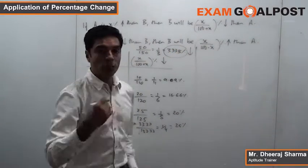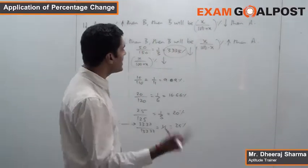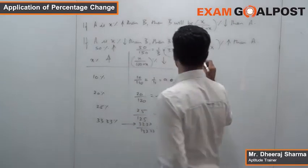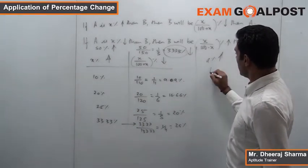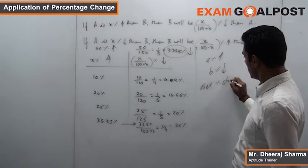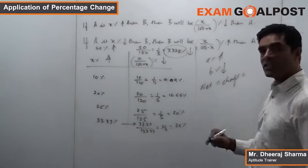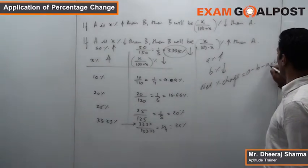So this is something which has to be there on your fingertips. Now let me explain you in a different way altogether. Why is it happening? Because what we have seen is that let's say there is an increase of A percent and there is a decrease of B percent. So the net percentage change, if I want to do it with the help of successive percentage change, it will be nothing but A minus B minus A×B/100.